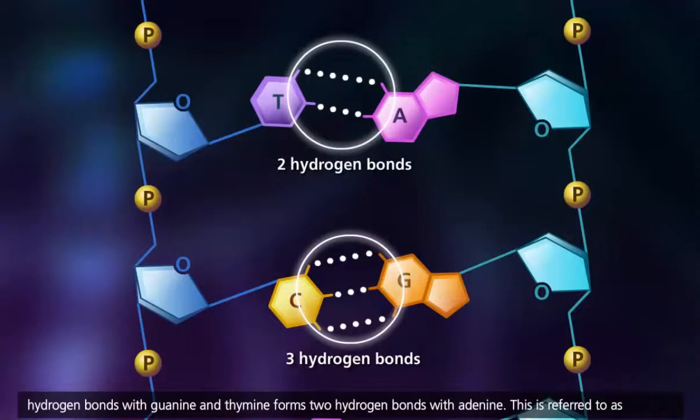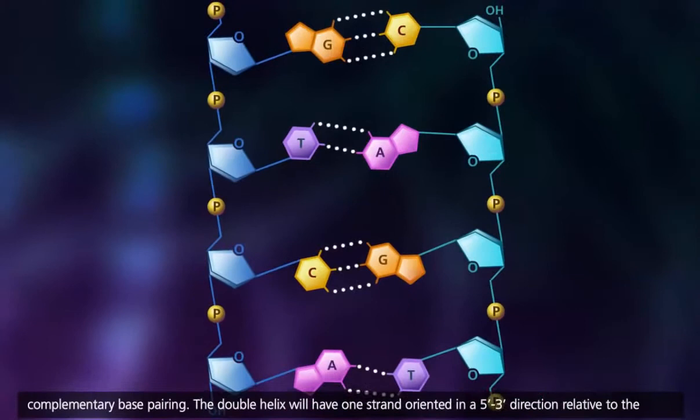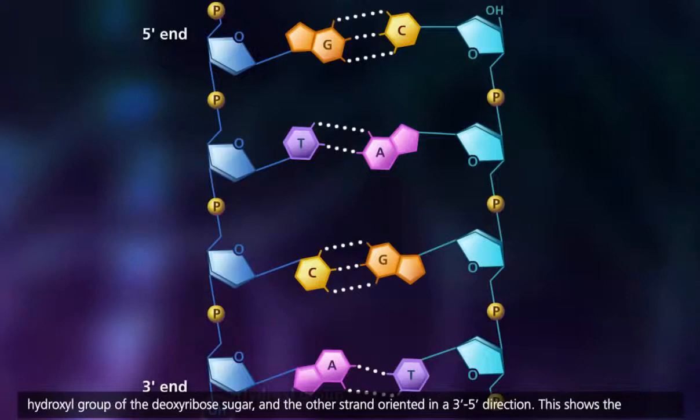The double helix will have one strand oriented in a 5' to 3' direction relative to the hydroxyl group of the deoxyribose sugar, and the other strand oriented in a 3' to 5' direction. This shows the anti-parallel nature of the DNA strands.